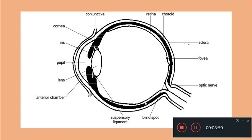Throughout the retina there will be nerve cells, all having nerve fibers, and all these nerve fibers will converge at one point — this region where they leave the eye. All these nerve fibers leave the eye as a single nerve which is called as the optic nerve. This converging point, where all the nerve fibers of the nerve cells present in the retina come and converge, is called as the blind spot, from where they pass out of the eye as the optic nerve.